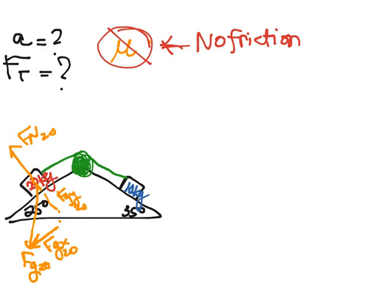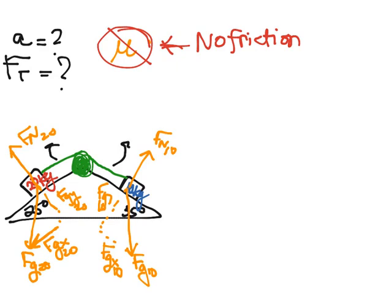For my 10 kilogram object, I again have FG straight down, and I'm just going to say FG10, and then I have to break it up into X and Y, so FGX10, and FGY10, and FN10. As I told you before, I'm going to unwrap the pulley. So I'm going to unwrap this string, so that both FNs are pointing straight up.